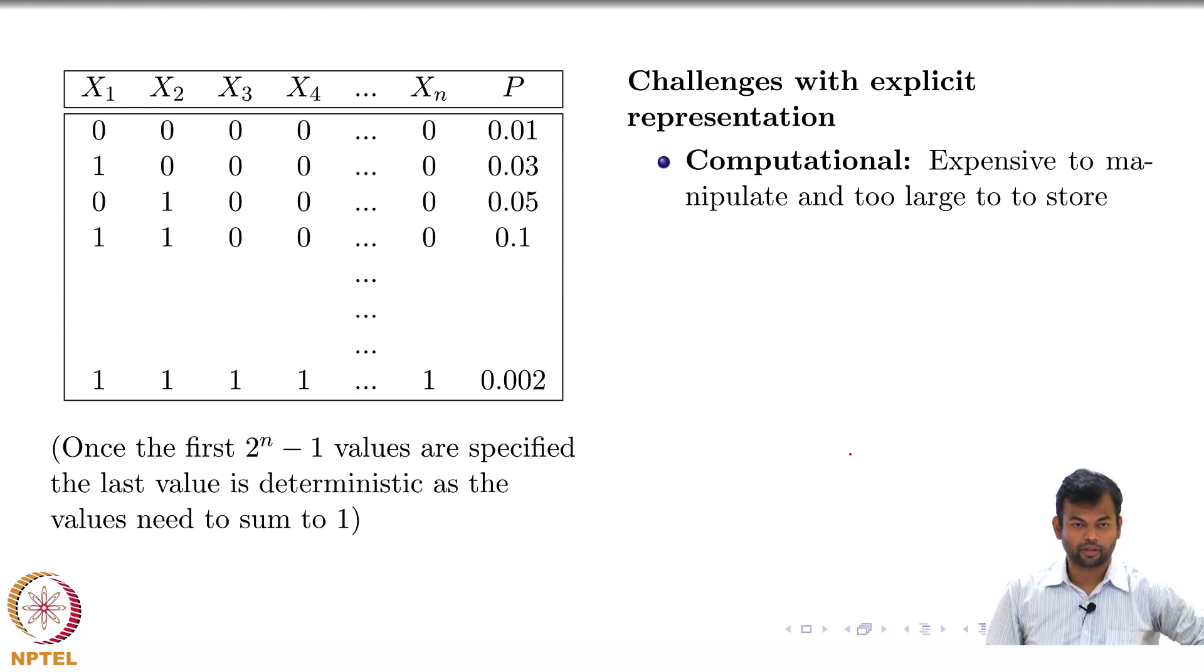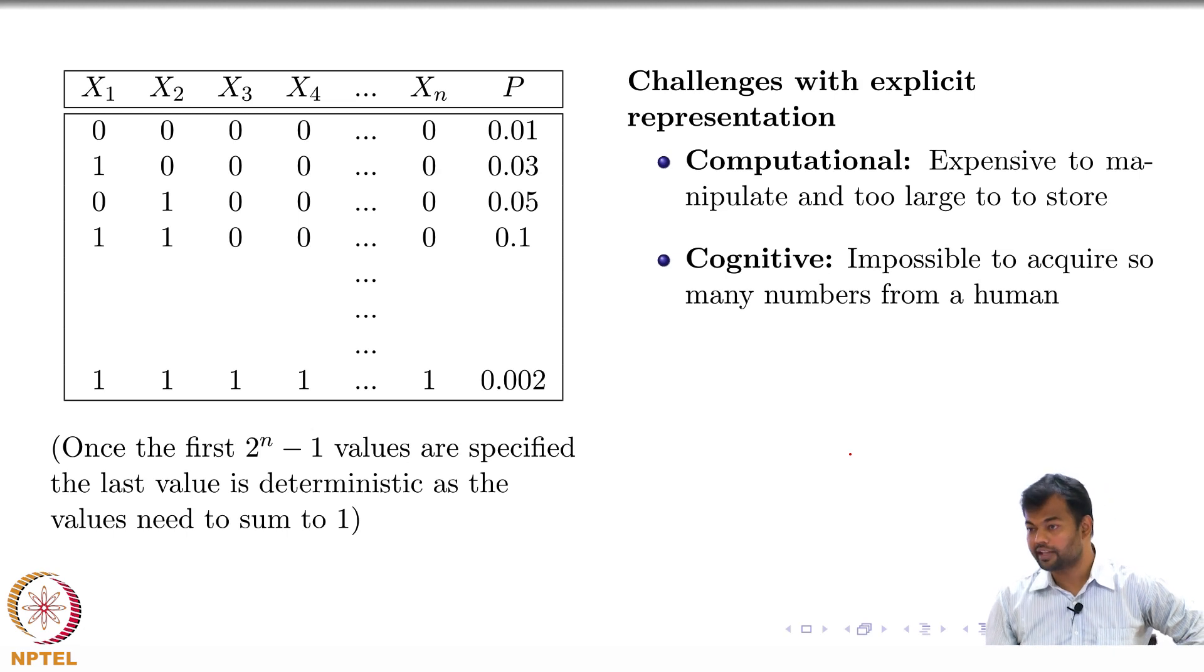But as the value of n increases, what is going to happen? It is going to become impossible to acquire these tables or these values from humans. No human is going to be able to give you that. If humans cannot do it, who will do it? Machines will do it. They learn from humans, they learn from data. That brings me to the third part.